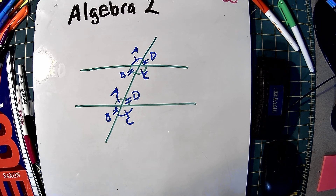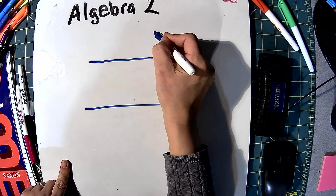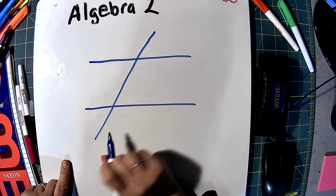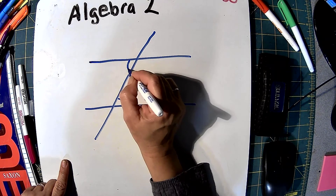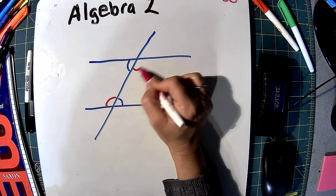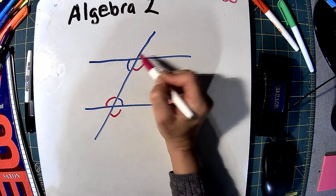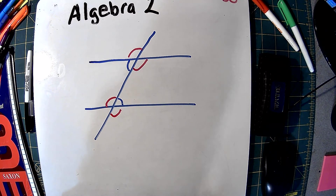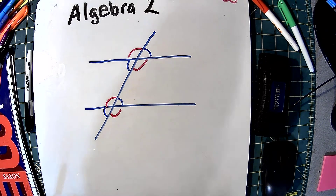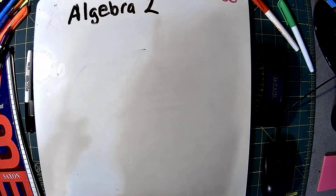Because vertical angles are equal, and alternate interior angles are equal when parallel lines are cut by a transversal, the exterior angles are also going to be equal because opposite angles are equal. Now we are going to prove that all the angles in a triangle equal 180.